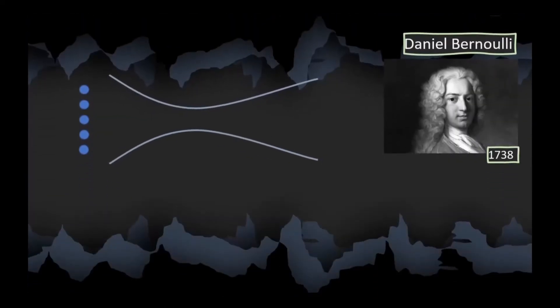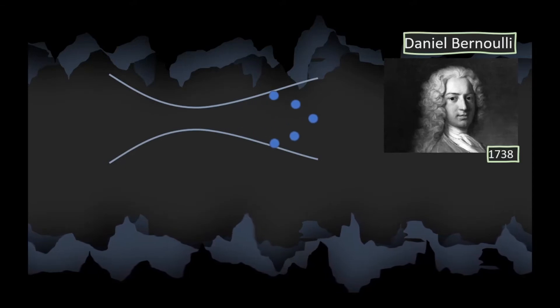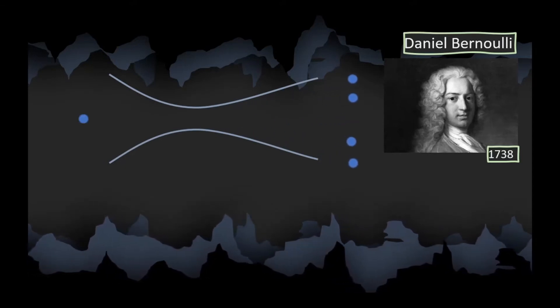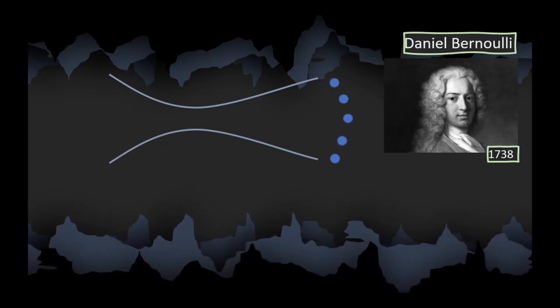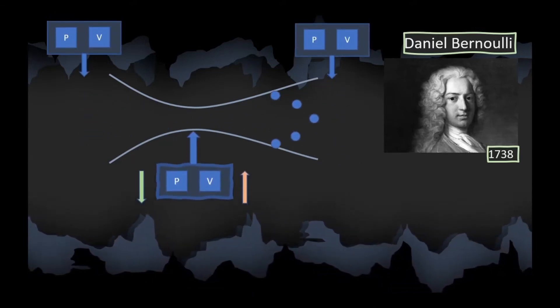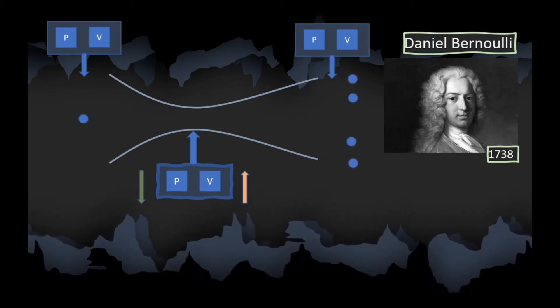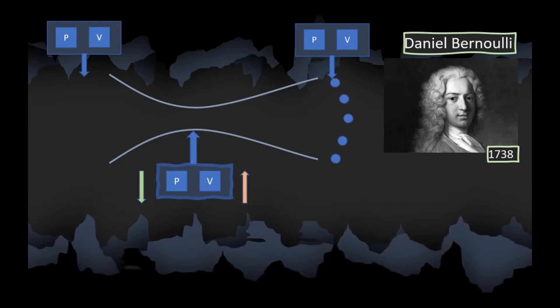Daniel Bernoulli found that when a fluid is passed through a converging and diverging area, the properties of the fluid like pressure and velocity change at different points. We measured the pressure and velocity of the fluid at different points and found that at the converging area, the pressure decreases and the velocity increases, keeping the mass flow rate constant.